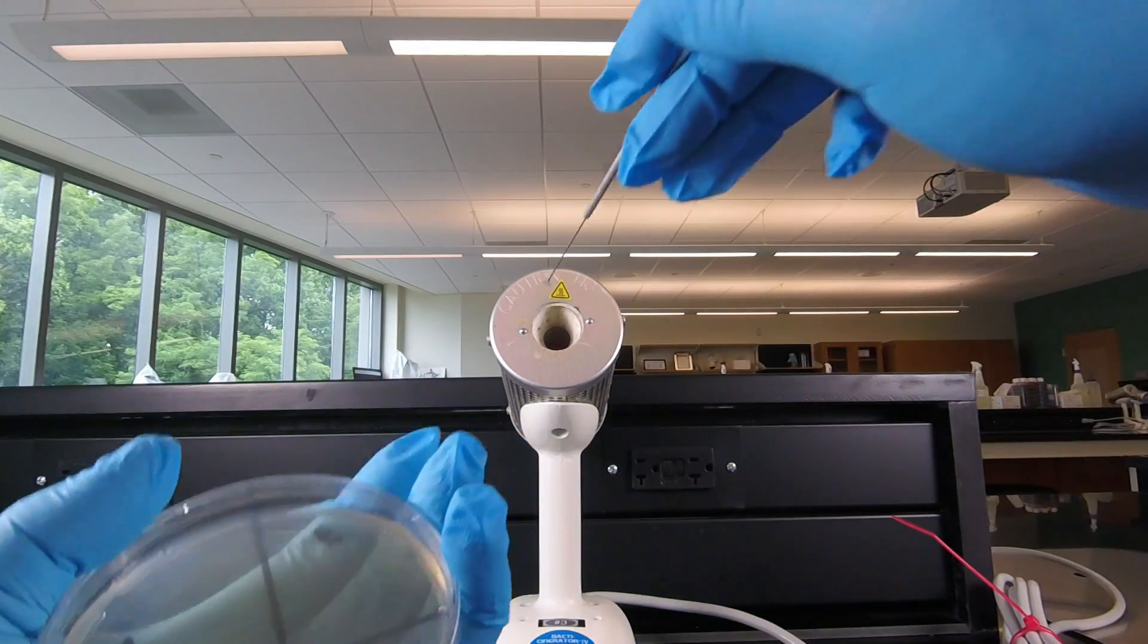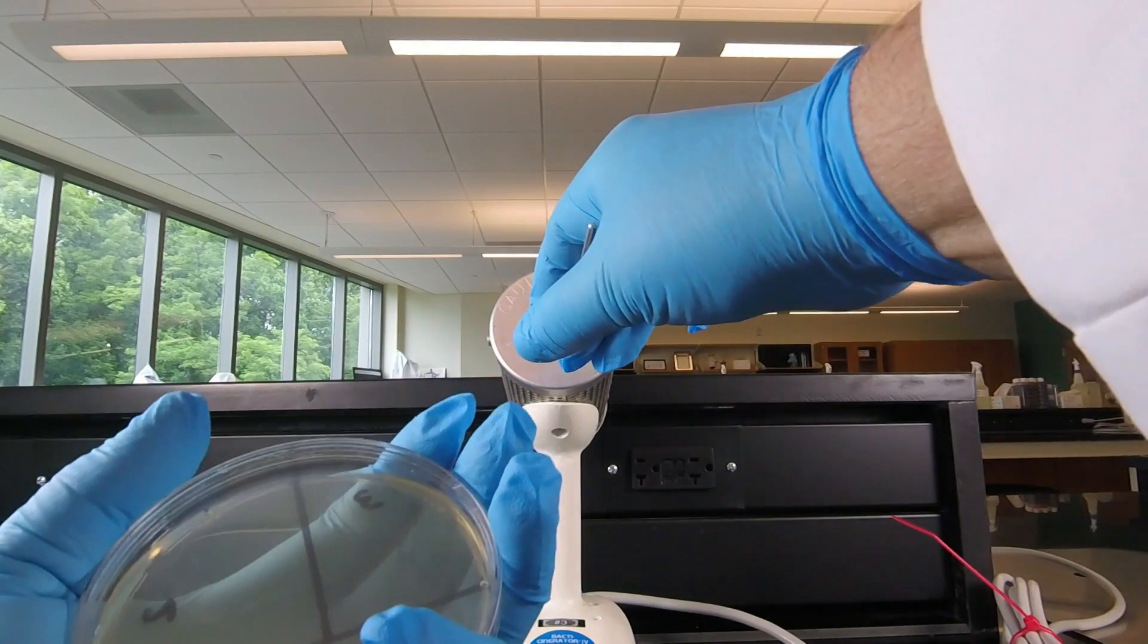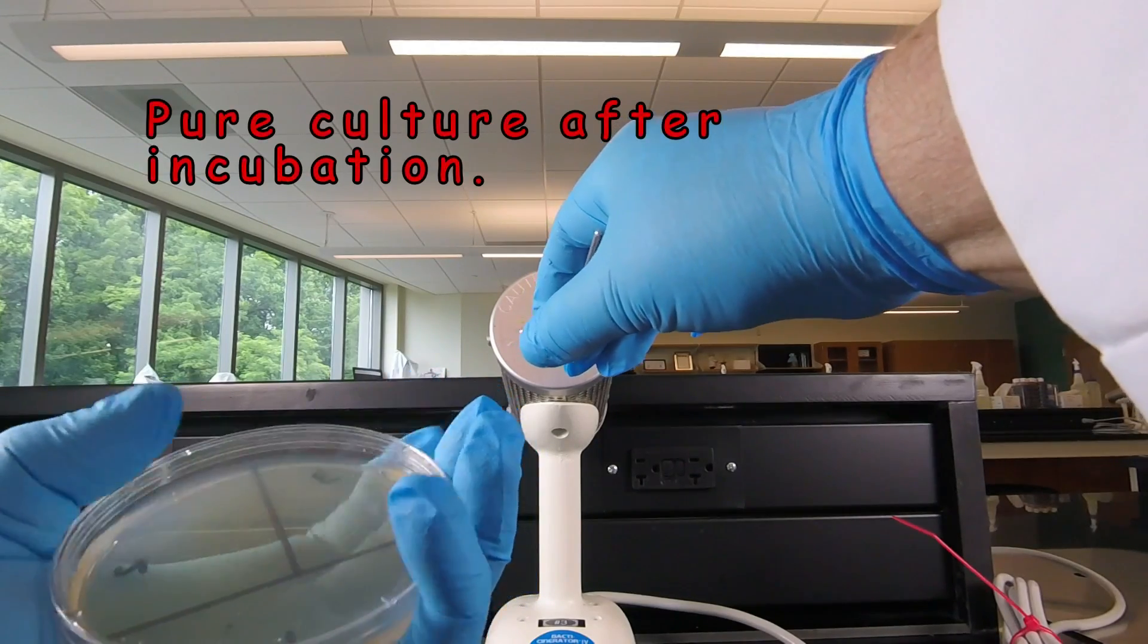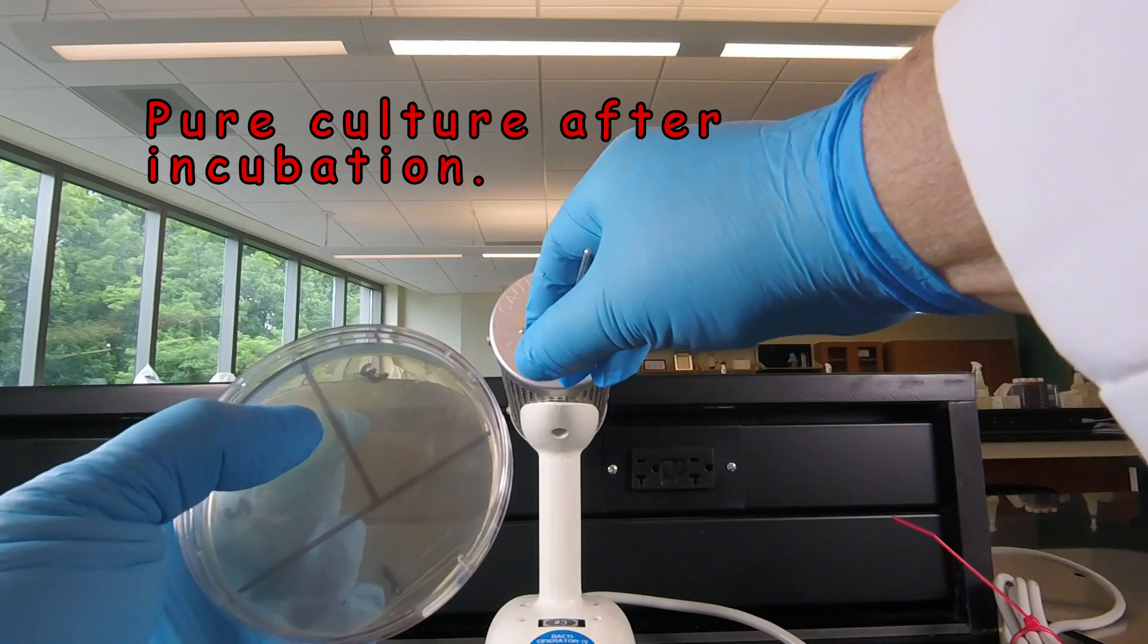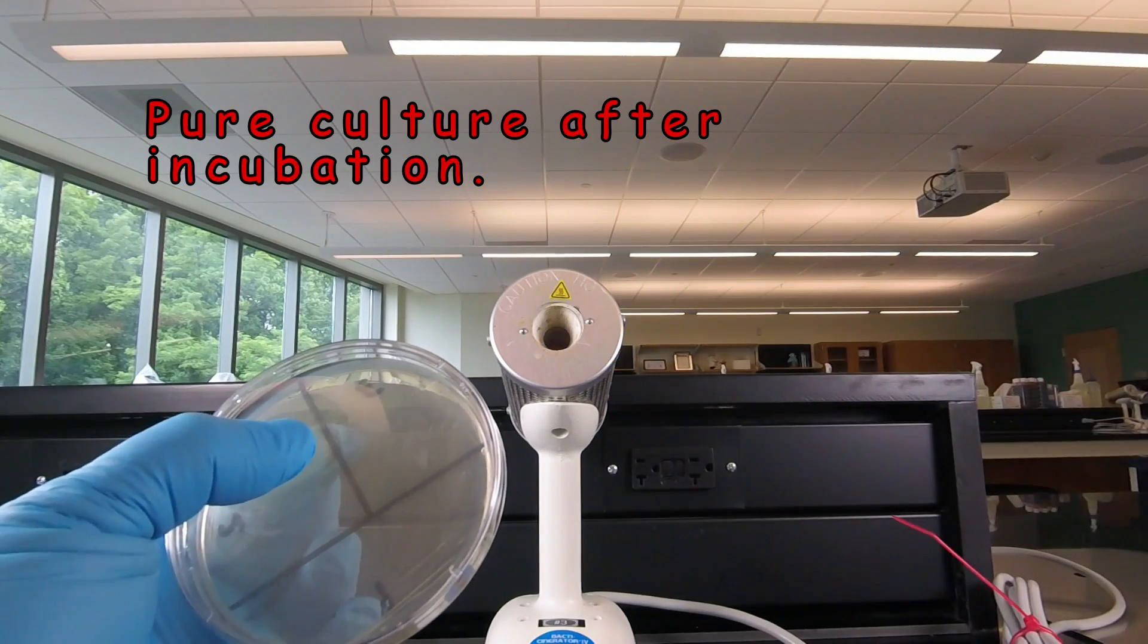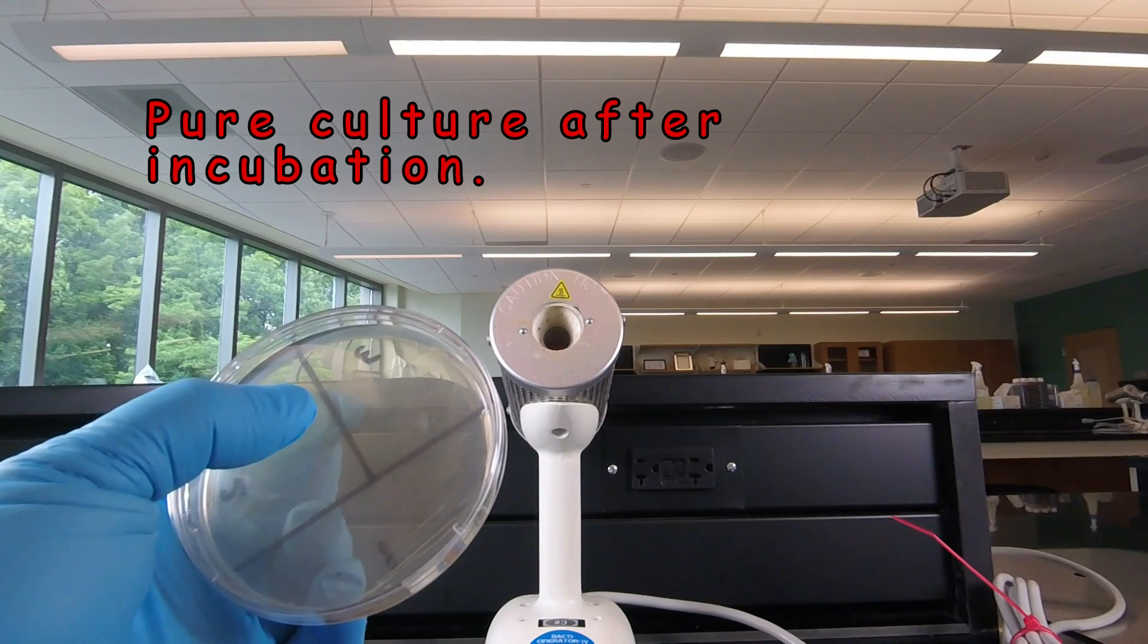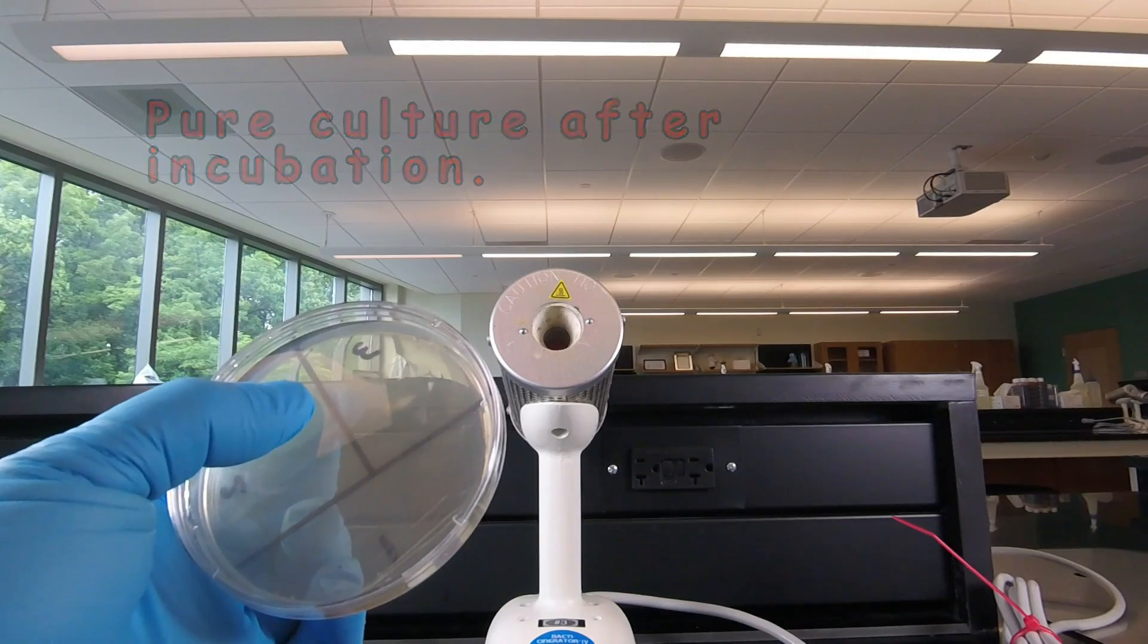And then after we sterilize our inoculating loop, we're done. We can incubate the plate and next time we should have a pure culture. Everything that grows on this plate came from a portion of one colony and that one colony came from one bacterium or one arrangement of that bacterium. And we have then by definition of pure culture, one in which all organisms are descendants of the same organism.